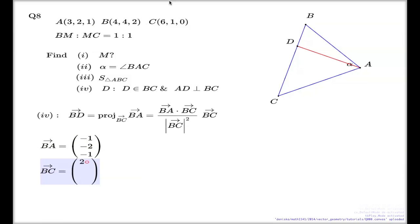This is BC. 6 take 4, it's 2. 1 take 4, negative 3. 0 take 2, negative 2.